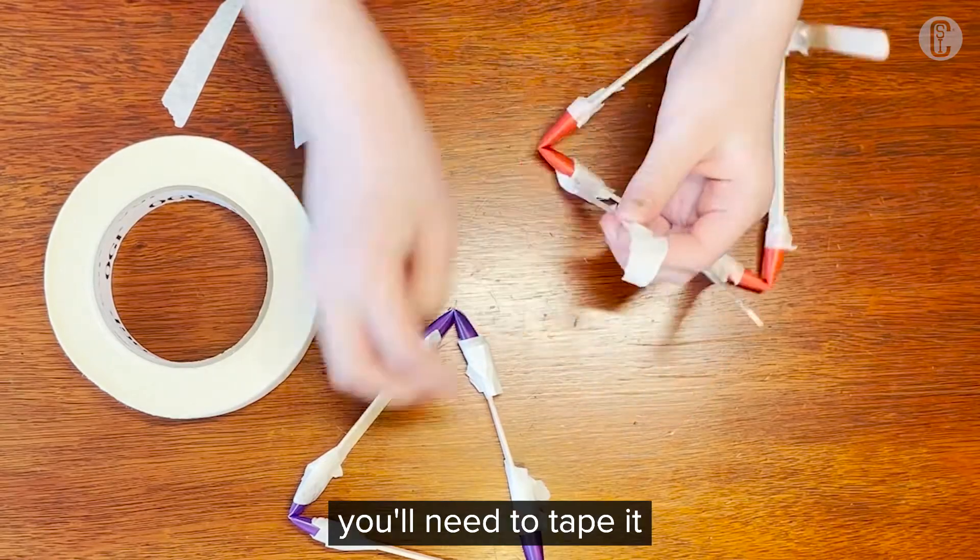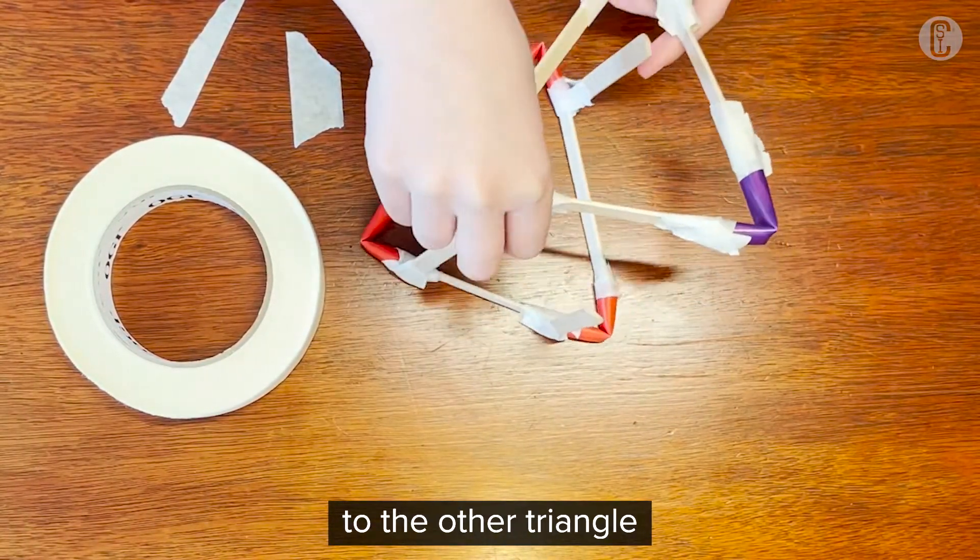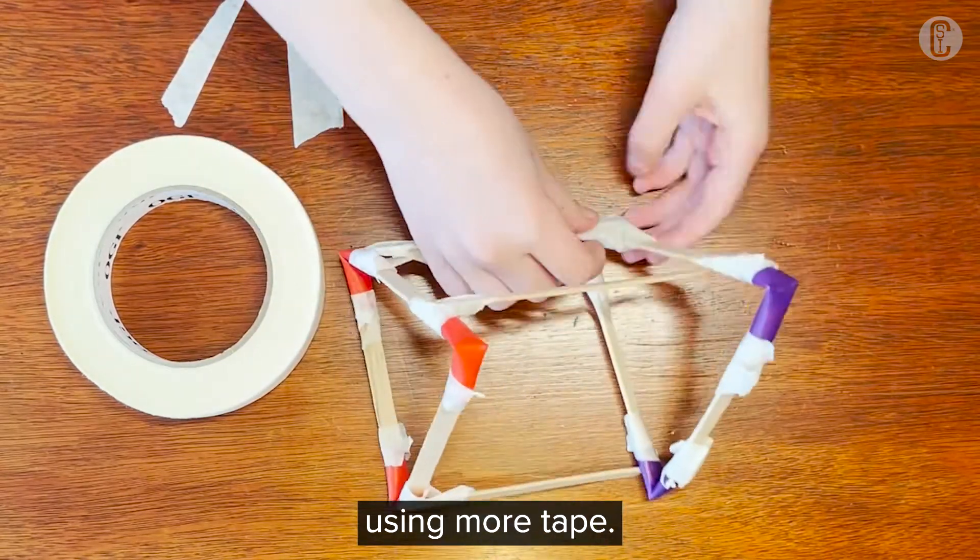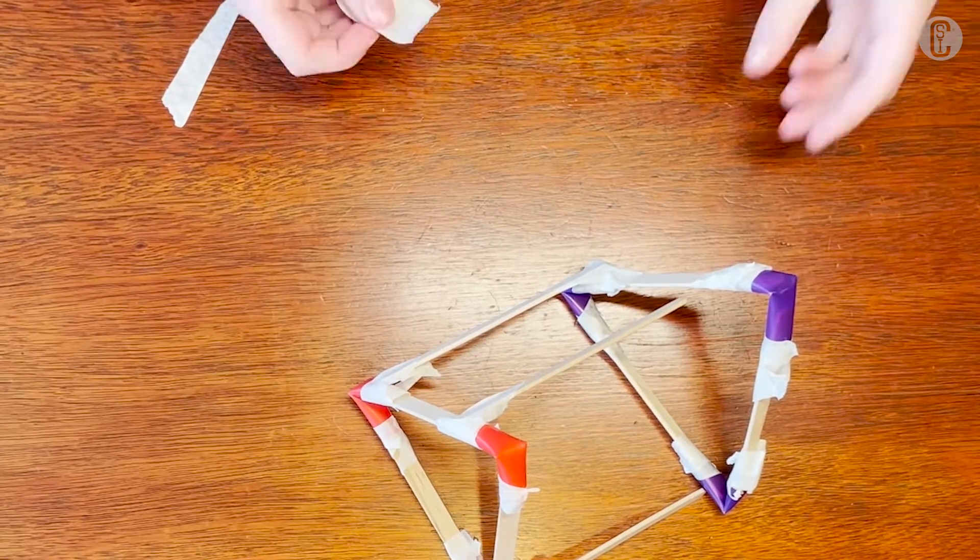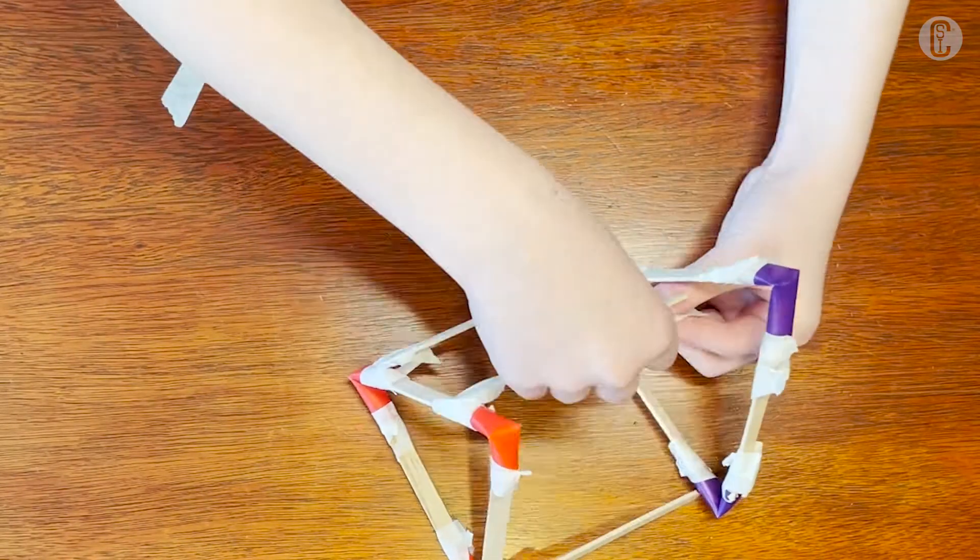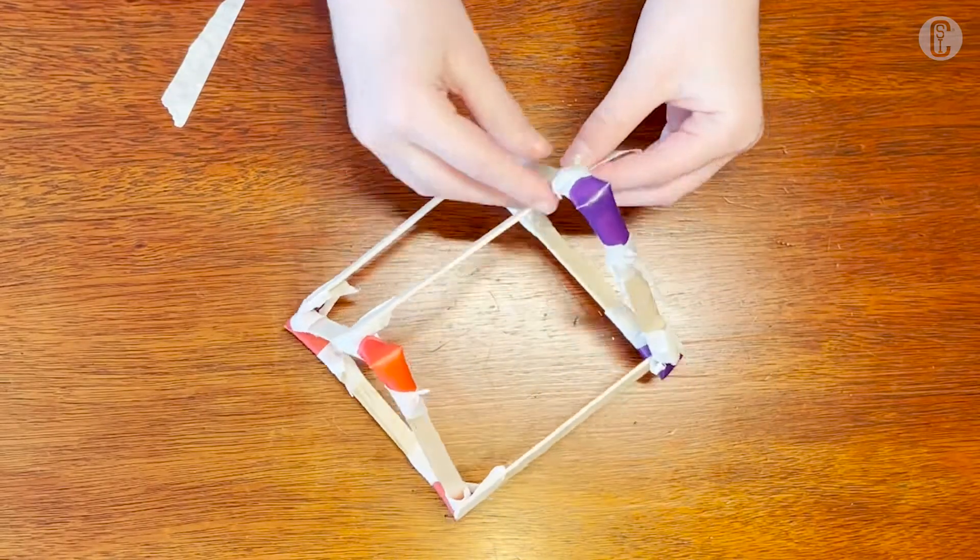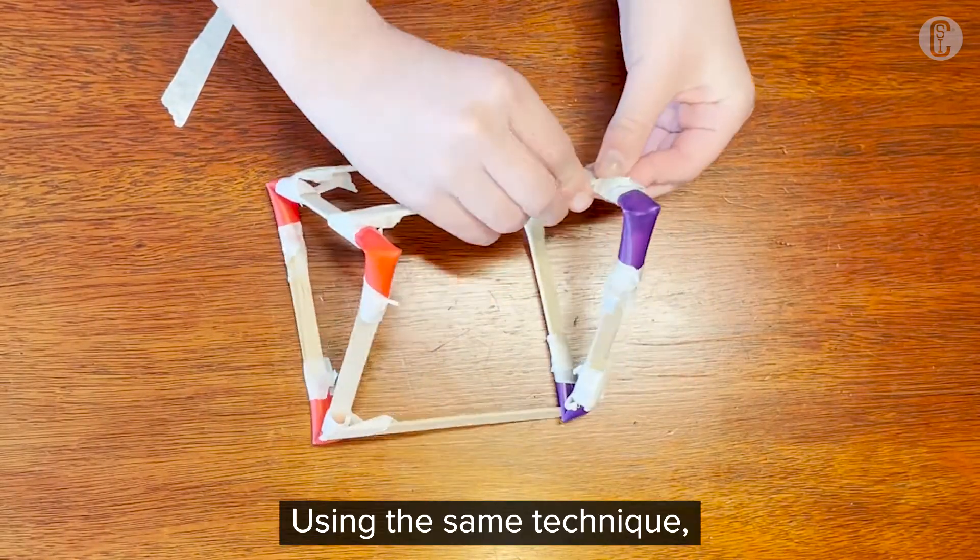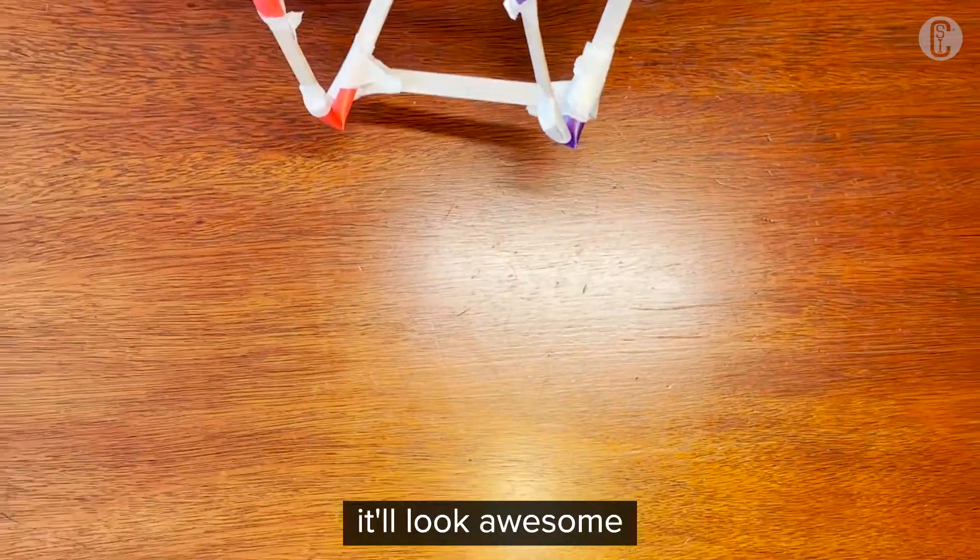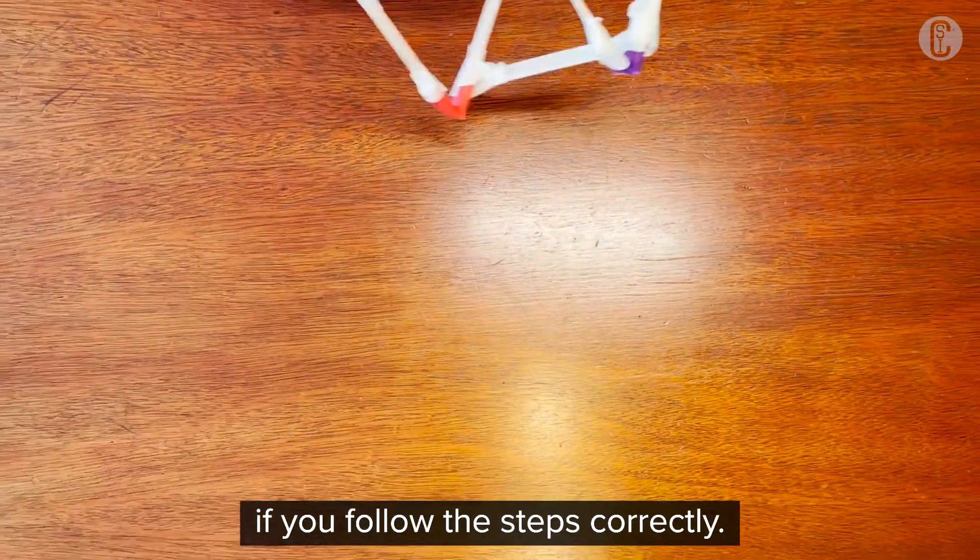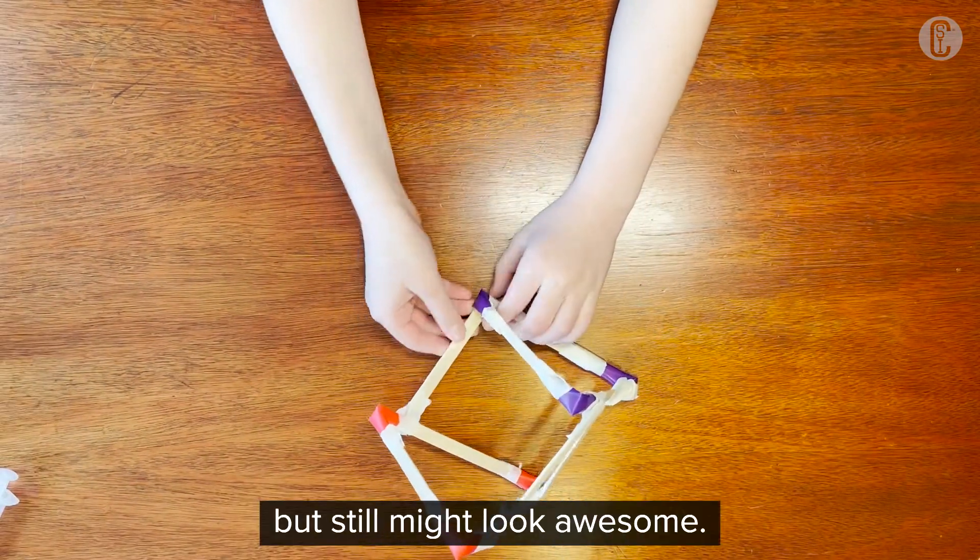When you have this, you'll need to tape it to the other triangle using more tape. Using the same technique to keep putting it on, eventually it'll look awesome. Follow the steps correctly. If you don't, it's going to look like a bunch of stuff taped together, but it still might look awesome.